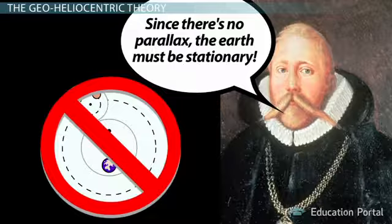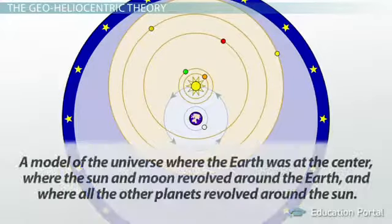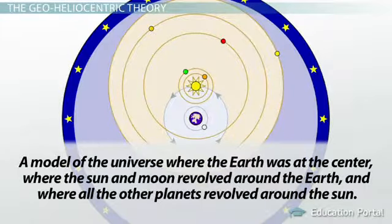So Tycho decided to come up with his own model of the universe, a model of the universe where the Earth was at the center, where the Sun and Moon revolved around the Earth, and where all the other planets revolved around the Sun.